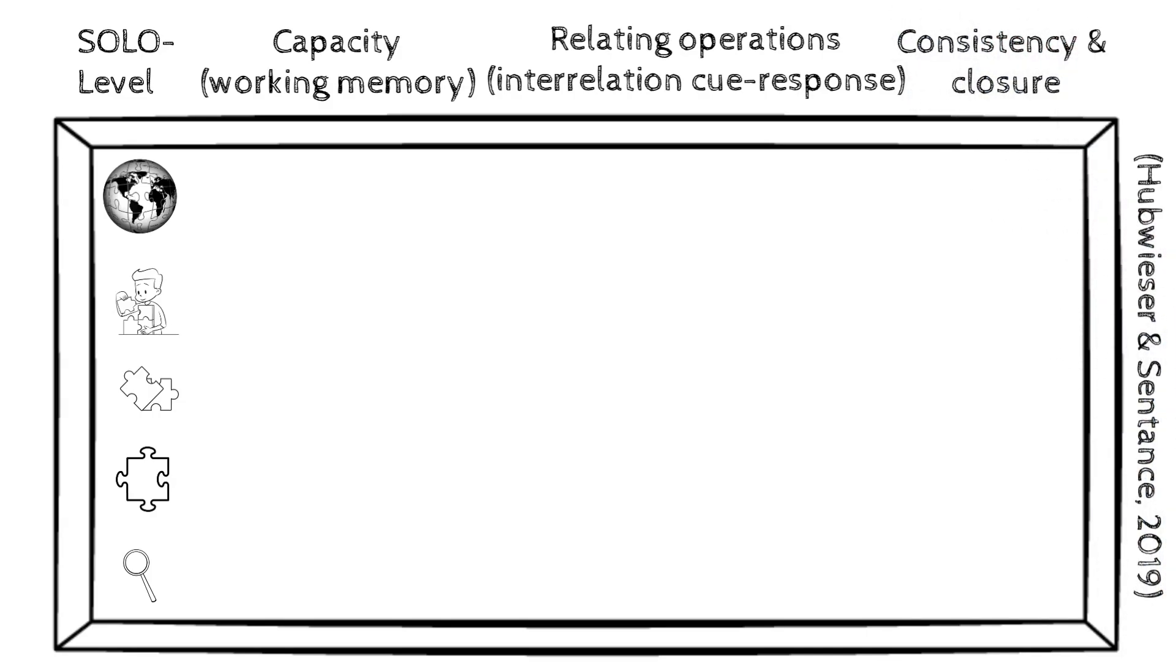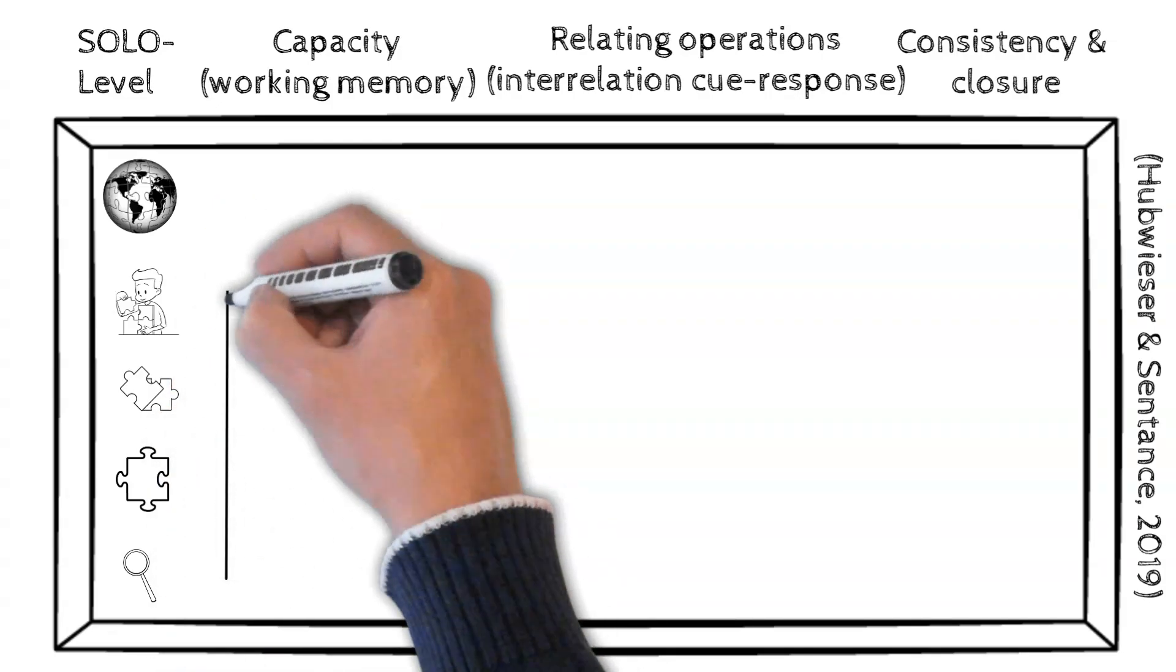Is the response logically concluded? Is the argument coherent? This dimension considers the consistency between the information provided and the conclusion the student draws. The table shows how each of these traits is expressed across SOLO levels, from minimal to maximal.